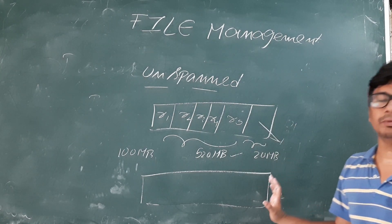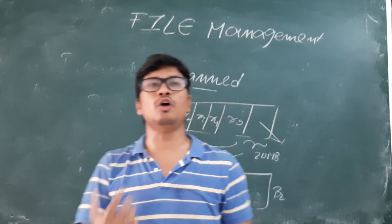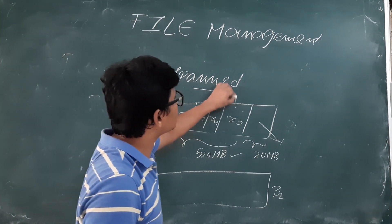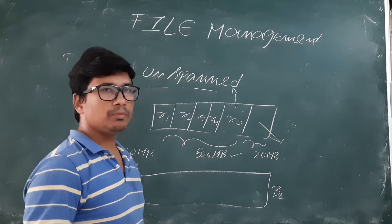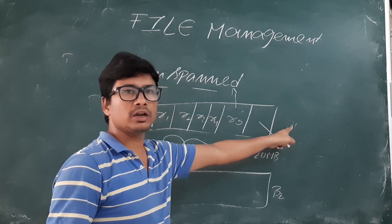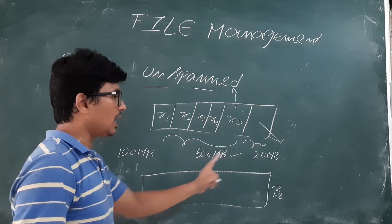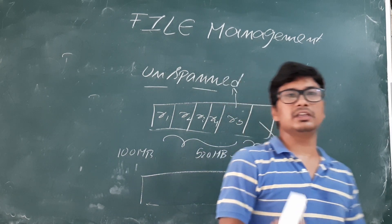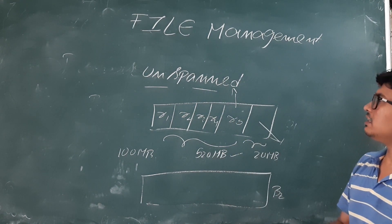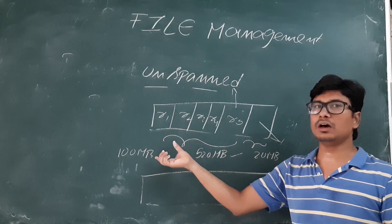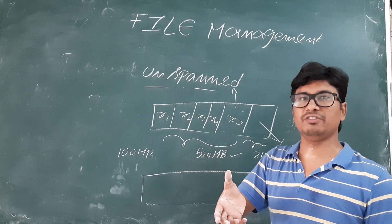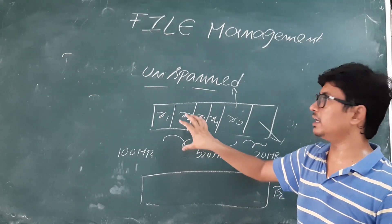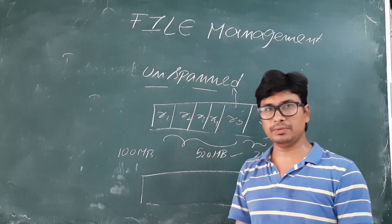The drawback of the unspanned strategy is that we are wasting memory. The advantage is that the number of block accesses are reduced, because if I want to access any particular record I can access a single block. If I want to access record 5 I access only block 1; if I want to access record 6 I access only block 2. The unspanned strategy is useful when the record size is fixed — when record sizes are uniform, we go for the unspanned strategy.